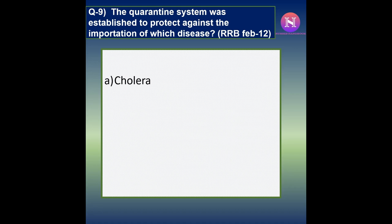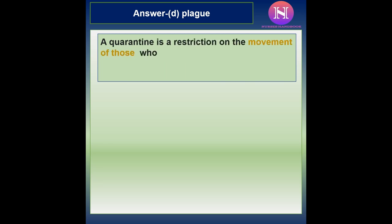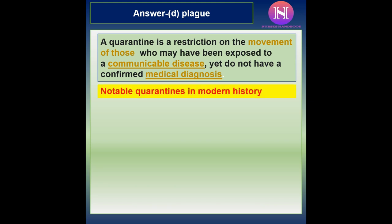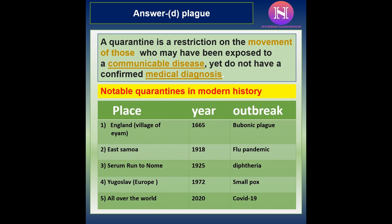Question 9: The quarantine system was established to protect against the importation of which disease? a. Cholera. b. Yellow fever. c. Leprosy. d. Plague. The correct answer is d — plague. A quarantine is a restriction on the movement of those exposed to a communicable disease but not yet with a confirmed diagnosis. The first quarantine was introduced in 1665 for the bubonic plague outbreak, then in 1918 for the flu pandemic, 1925 for diphtheria, 1972 for smallpox, and in 2020 worldwide for COVID-19.